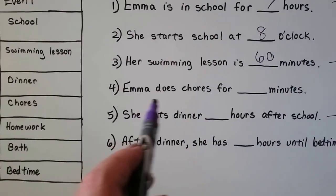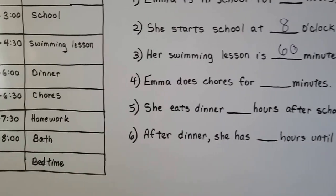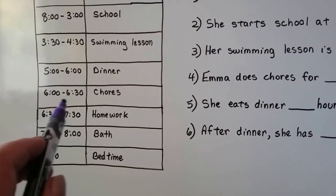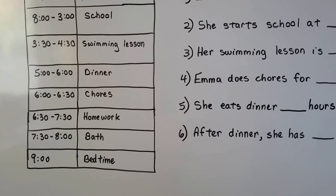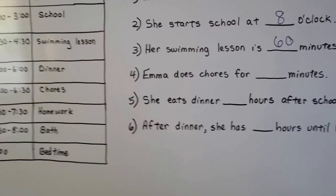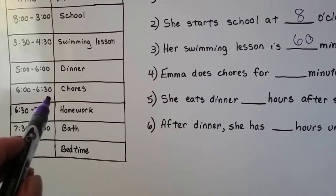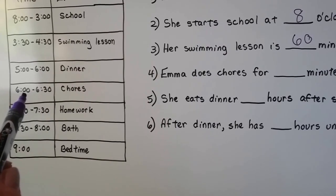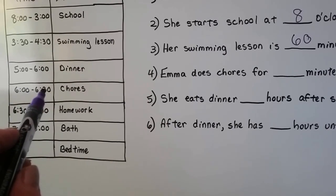The next one says, Emma does chores for blank minutes. Well, her chores, she starts them at 6 and she's finished at 6:30. We can just look at this and see the only difference between the 6 o'clock and the 6:30 is the 30.